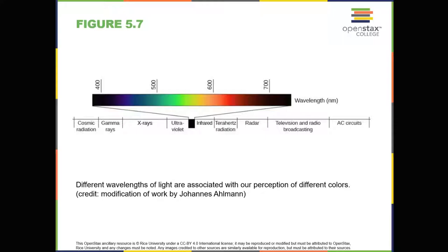In humans, light wavelength is associated with perception of color, as shown in Figure 5.7. Within the visible spectrum, our experience of red is associated with longer wavelengths, green is intermediate, and blues and violets are shorter in wavelength. An easy way to remember this is the mnemonic ROYGBIV — red, orange, yellow, green, blue, indigo, violet. The amplitude of light waves is associated with our experience of brightness or intensity of the color, with larger amplitudes appearing brighter.